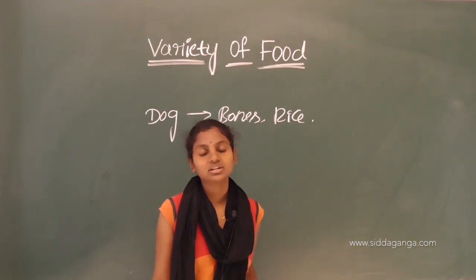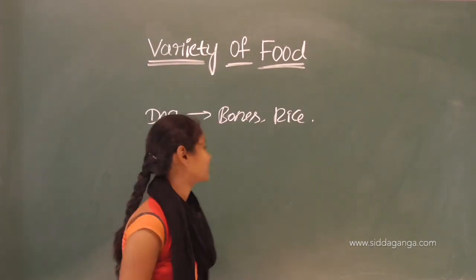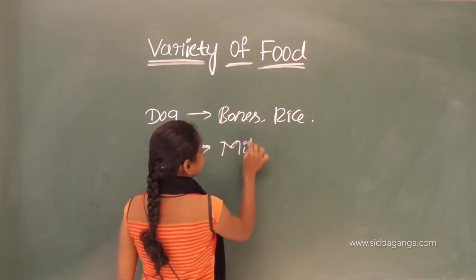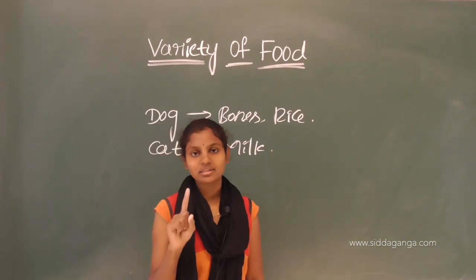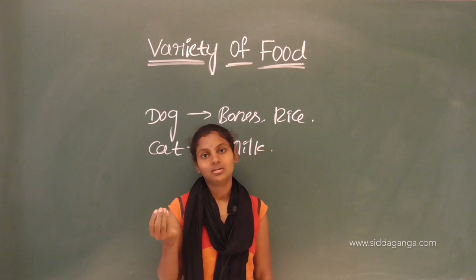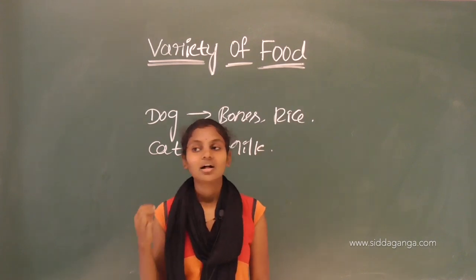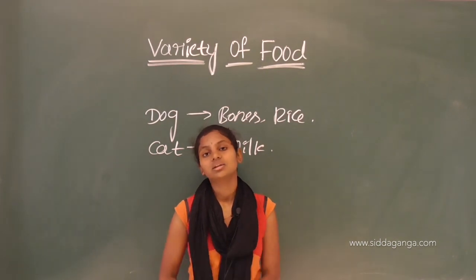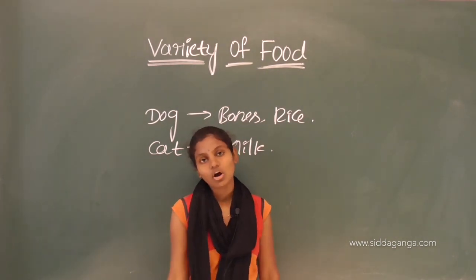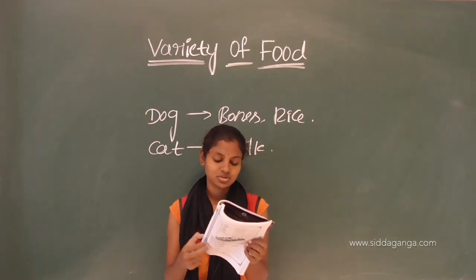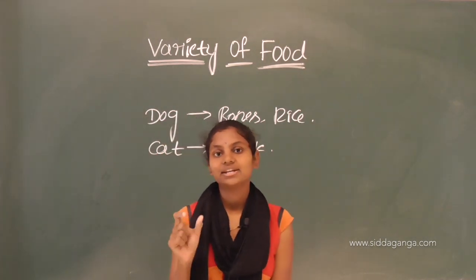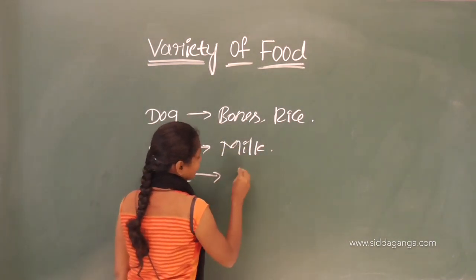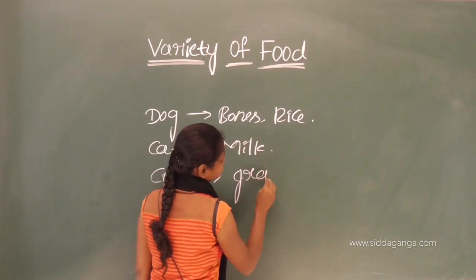Second one is cat. Cat can drink milk. And cow — cow can eat grass. Cow is a very domestic animal and it can eat grass.